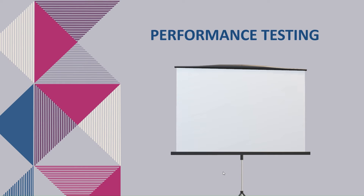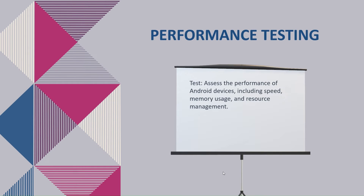The next category is performance testing. These test cases assess the performance of Android devices, including speed, memory usage, and resource management. Performance bottlenecks may require optimization in the Android operating system kernel or device-specific components to improve responsiveness and resource management. For example, if a system component is using too much memory and the device becomes very slow, performance testing test cases help identify and address that.